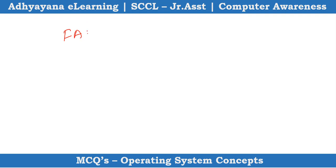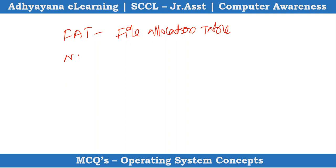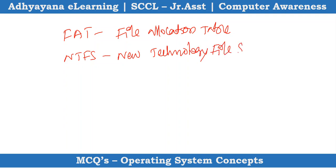FAT is the full form — FAT stands for File Allocation Table. NTFS stands for New Technology File System. These are the full forms for the basic and advanced file systems in OS.